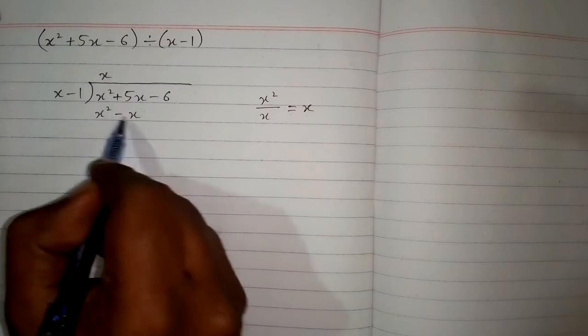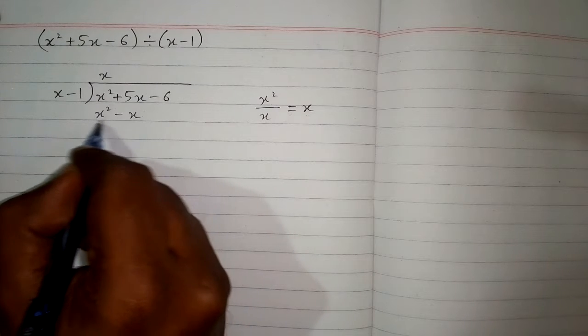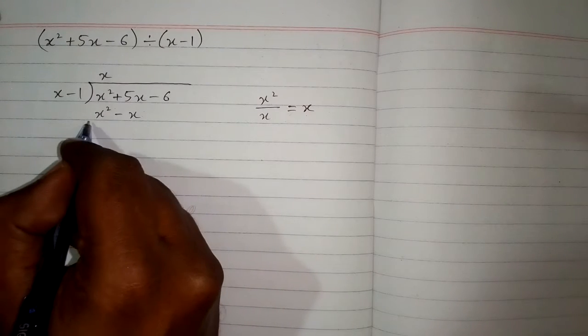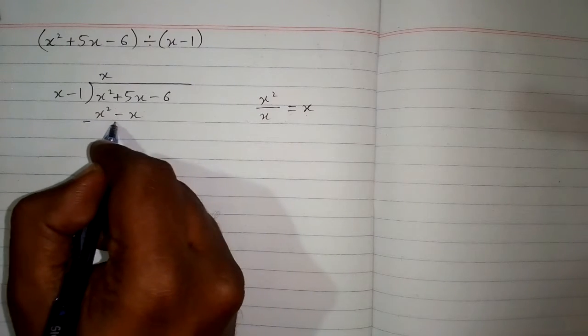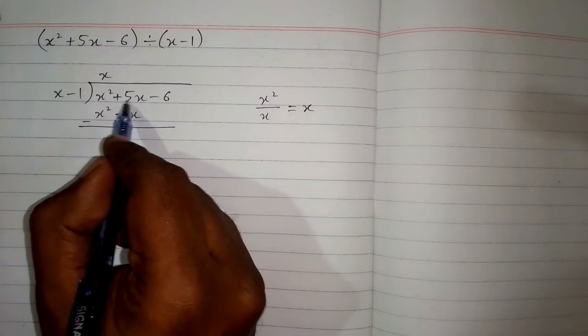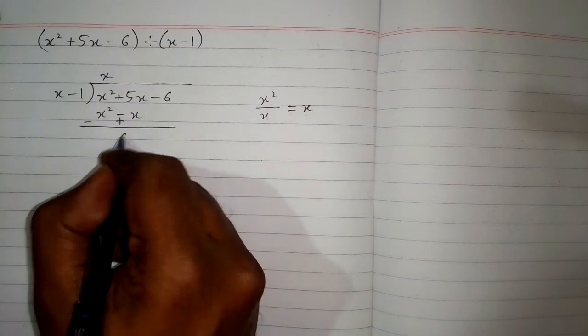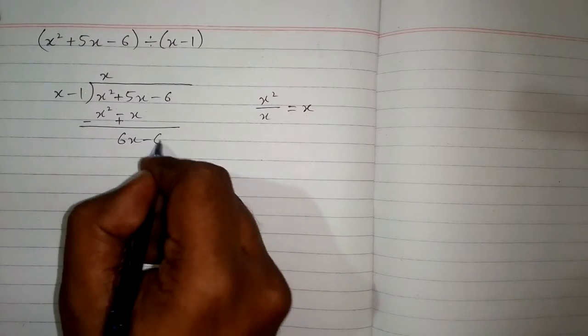Now, we will subtract this polynomial from this polynomial. So we will change the sign of each term in this polynomial. So this will become minus and this minus will become plus. So x squared minus x squared is 0 and 5x plus x is 6x. And then we will write minus 6 over here.